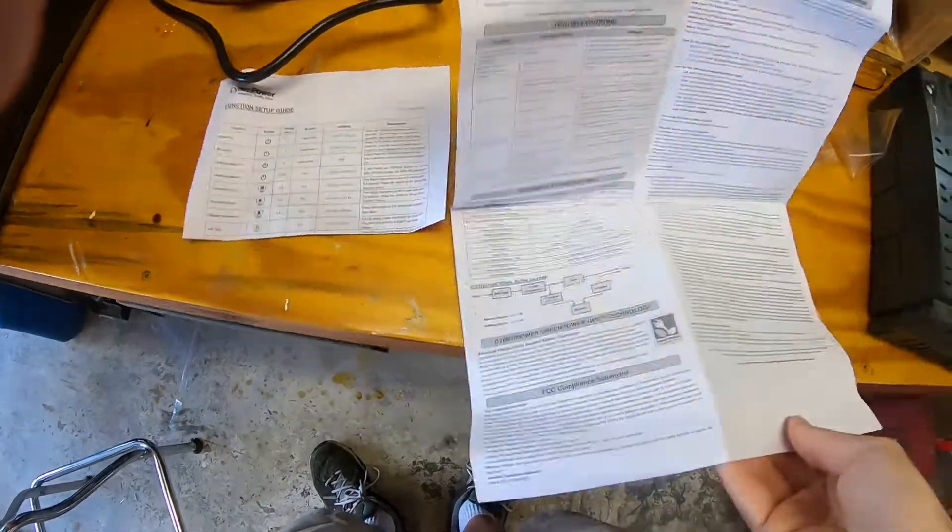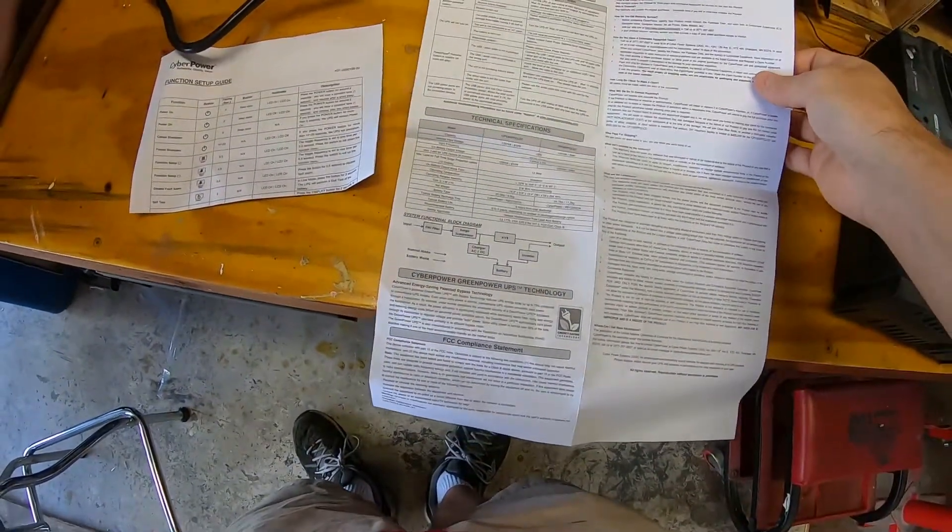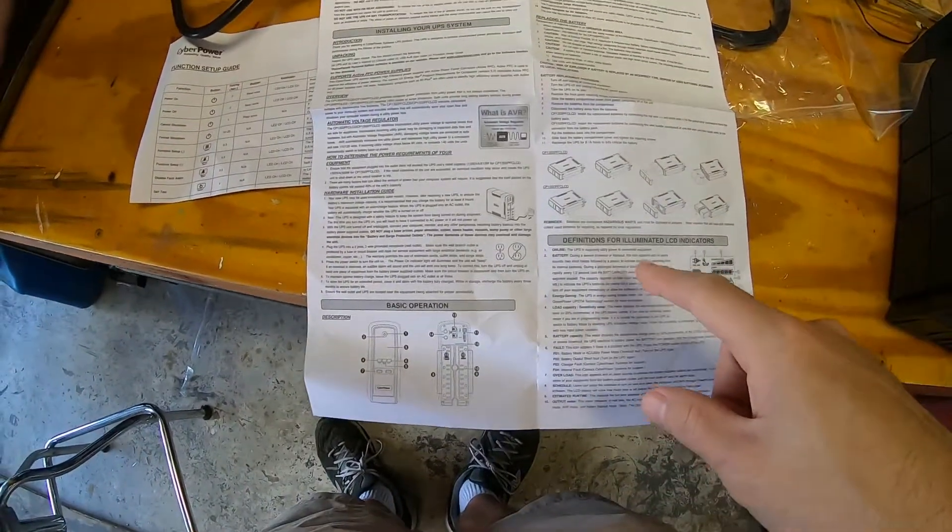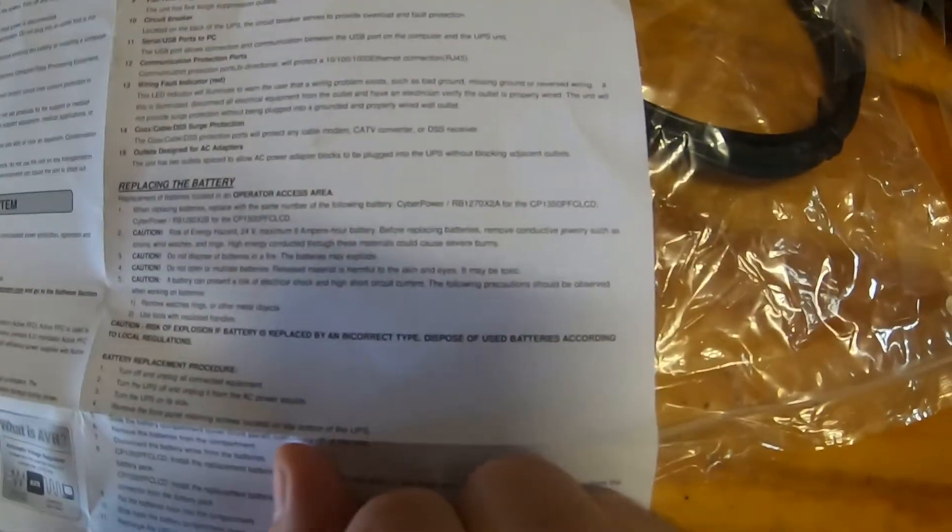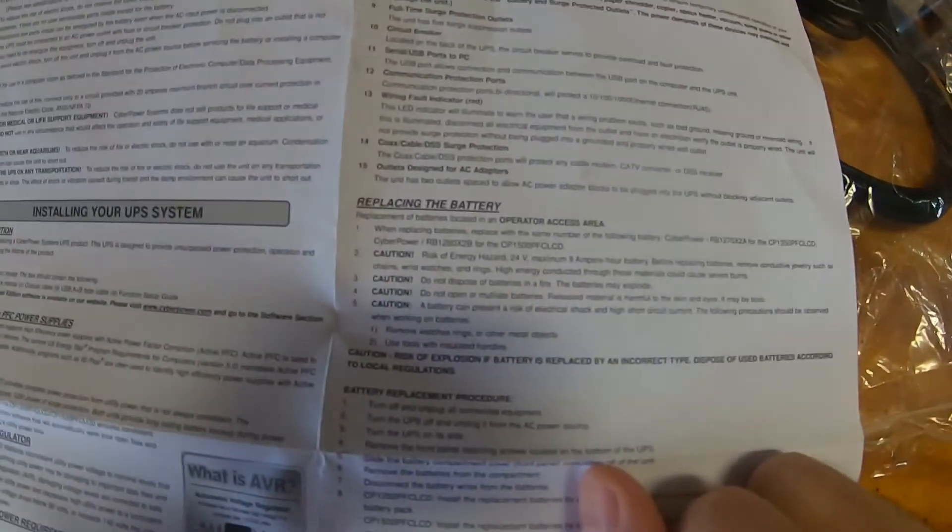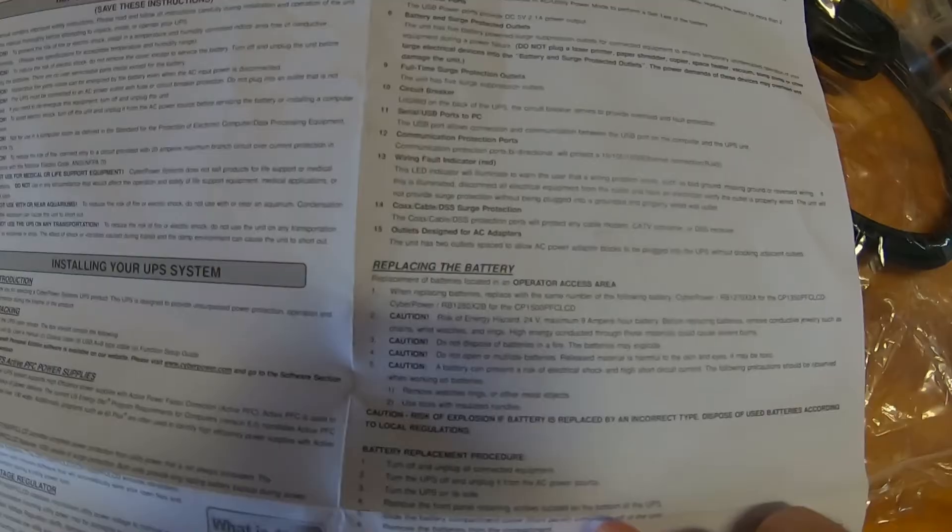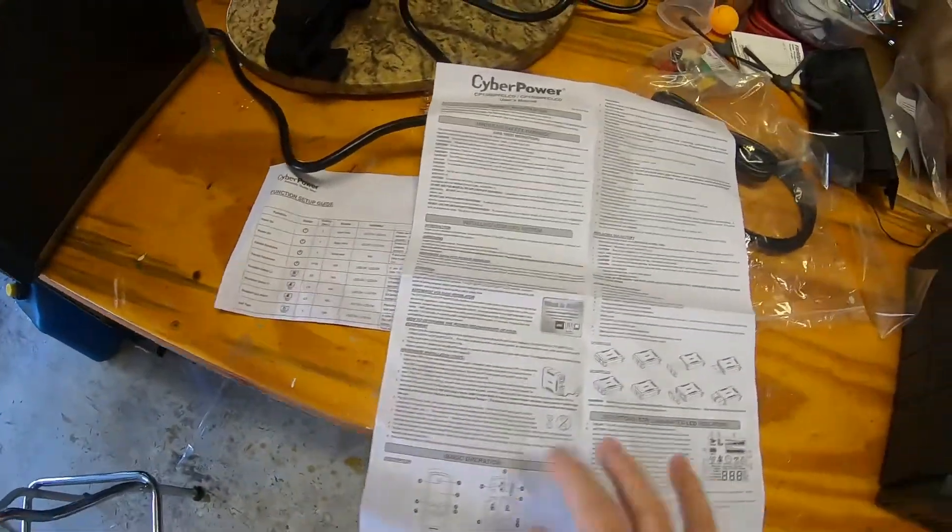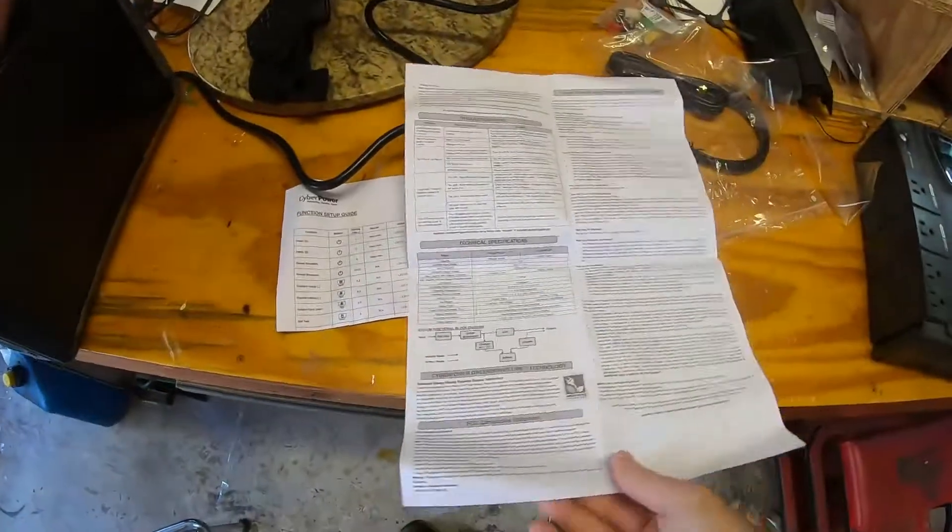Saw it somewhere in here. It is right here. So this one takes an RB1280X2B. That's the 1500 volt amp unit. So it's all this stuff here.